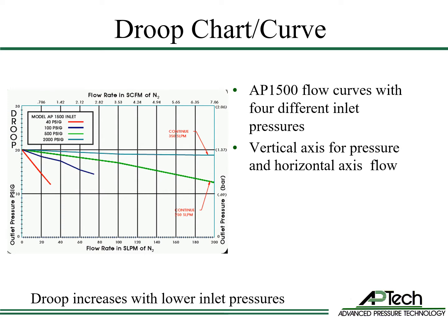You can see the significant impact of inlet pressure on regulator droop. As inlet pressure decreases, droop increases. When sizing a source regulator for gases, it is generally advised to use a flow curve with the intended cylinder change pressure for the inlet pressure. Using an inlet pressure of 200 to 300 psi, for example, as opposed to full cylinder pressure, will allow the user to select the correct regulator.